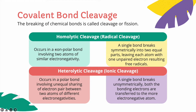Homolytic cleavage occurs in a non-polar bond involving two atoms of similar electronegativity. A single bond breaks symmetrically into two equal parts because they have the same electronegativity, leaving each atom with one unpaired electron, resulting in what we call free radicals.